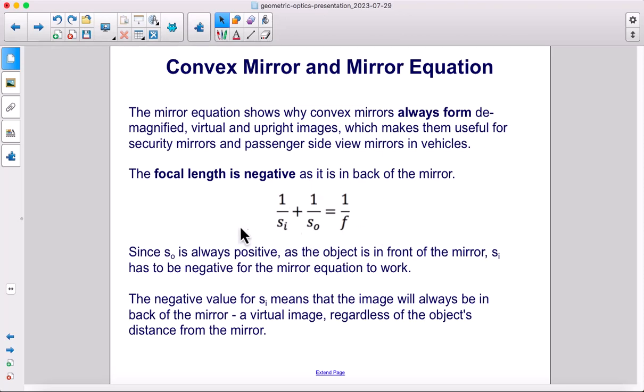The negative value for s sub i means that the image will always be in back of the mirror, a virtual image, regardless of the object's distance from the mirror.